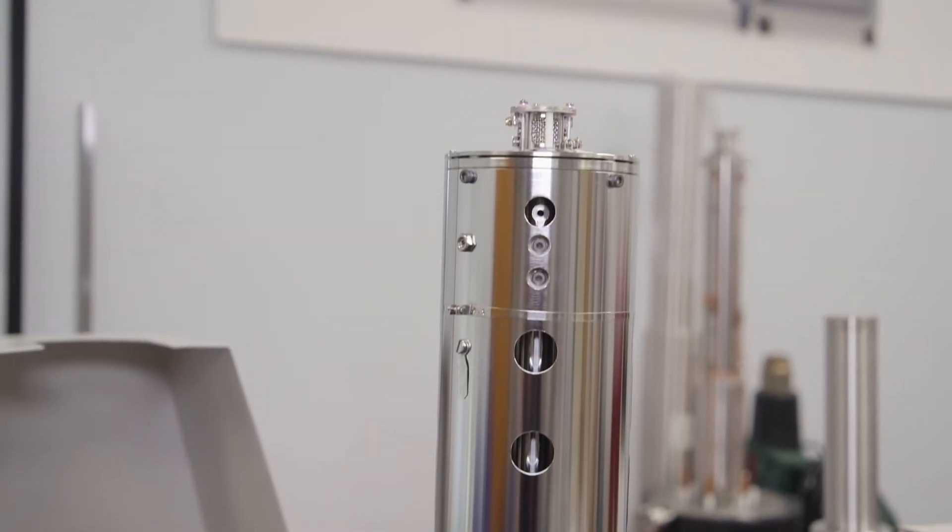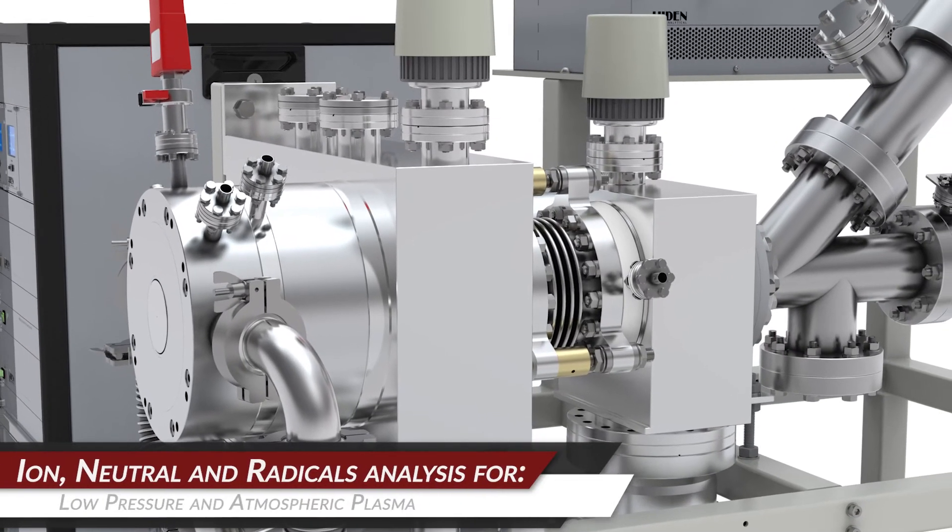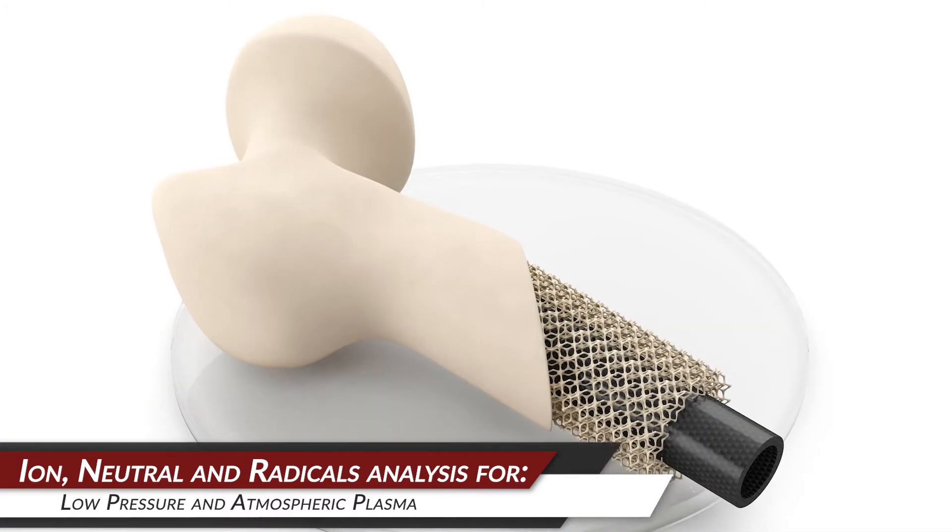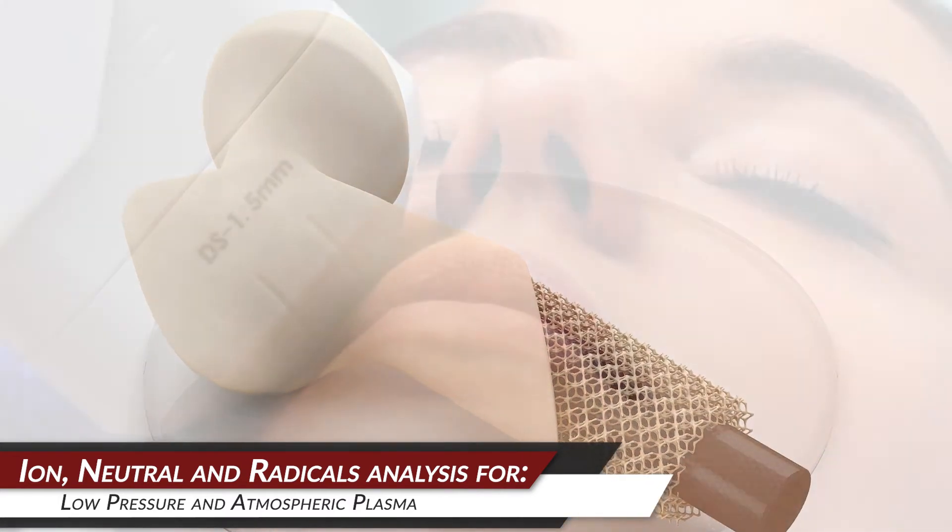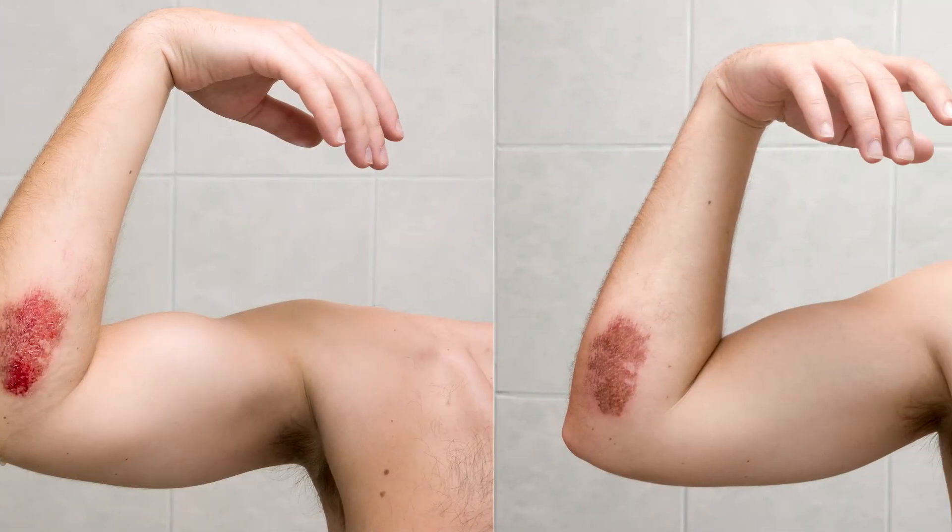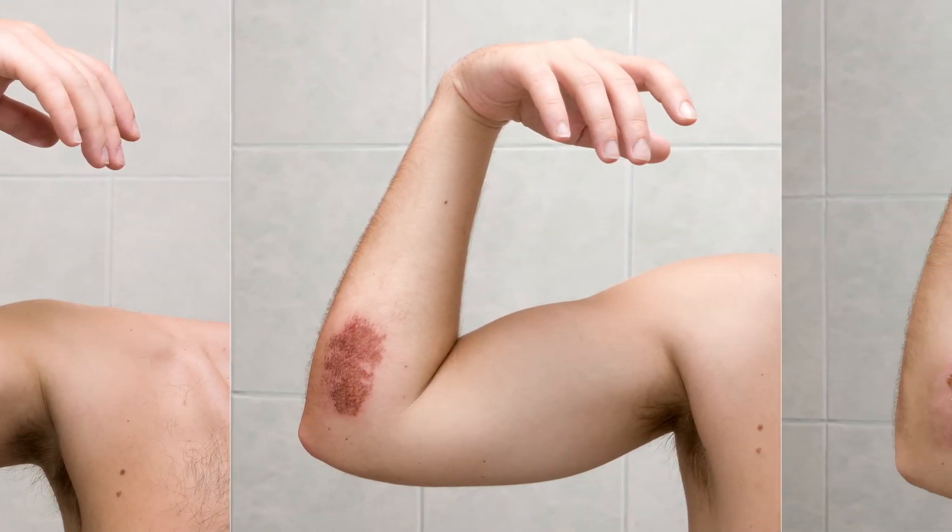In terms of plasma applications there's two broad areas that Haydn cover and that's low pressure plasmas and atmospheric plasmas for various types of research and applications. We have the Haydn HPR-60 system which can be used to characterize directly atmospheric plasmas which are generally used for medical treatment applications as well as surface treatment applications. These plasmas are highly ionized inert gas-based plasmas which are a combination of electrons, ions, neutrals and radicals as well as UV.